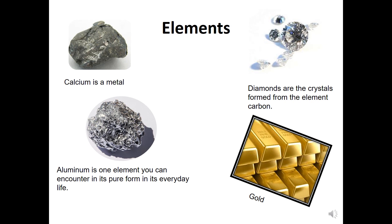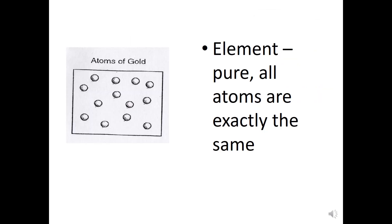If we think about our piece of aluminum from the periodic table lab and we looked at the atoms of your piece of aluminum and the atoms of my piece of aluminum, they would be exactly the same because they are pure aluminum atoms. An element is pure — all the atoms are exactly the same.